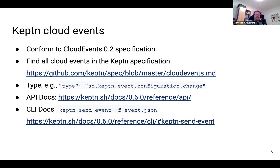The next important thing is knowing how to actually send a Cloud Event to Keptn. Most of you have probably heard about keptn send event new-artifact and keptn send event start-evaluation, but in fact you can send any Cloud Event that's specified to Keptn. You can interact with Keptn via a REST API — the reference is linked in the presentation. Or if you don't want to implement the REST API, you can use the Keptn CLI with the keptn send event command, specifying a JSON payload via minus F and a file name.